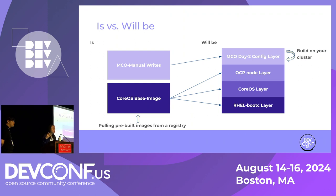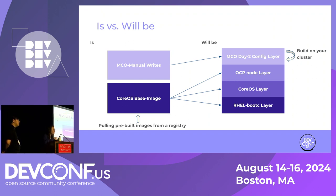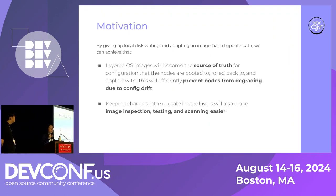That's why we're introducing what will be in the future: a fully image-based model. In the future what we'll have on the node is a raw layer, a CoreOS layer, an OCP node layer, and an MCO day-two config layer. By saying layer I'm not pointing to a single image - a layer can have multiple ones, and there's a sequence you can roll back to or forward to. All the manual writes will be built into an image and rolled out to a node. The layered OS image becomes the single source of truth for configuration, efficiently preventing nodes from degrading due to config drift, and keeping changes in separate layers makes image inspection, testing, and scanning easier.